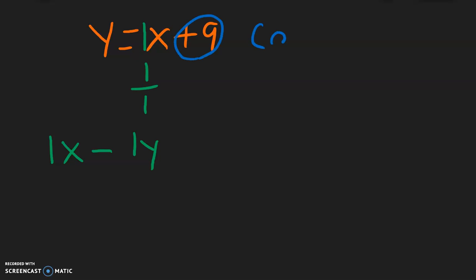Now, let's plug in the y-intercept, which is going to be 0 for the x, and positive 9 for the y. So plugging it in, we have 1 times 0 minus 1 times 9. So 1 times 0 is 0, and negative 1 multiplied with 9 is going to be negative 9, so 0 minus 9 is negative 9. So we have it equal to negative 9.